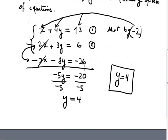...x substitution in either equation. For example, let's do it in the first one. It's x plus 4 times 4 equals 13. x plus 16 equals 13. x equals 13 minus 16 is negative 3.